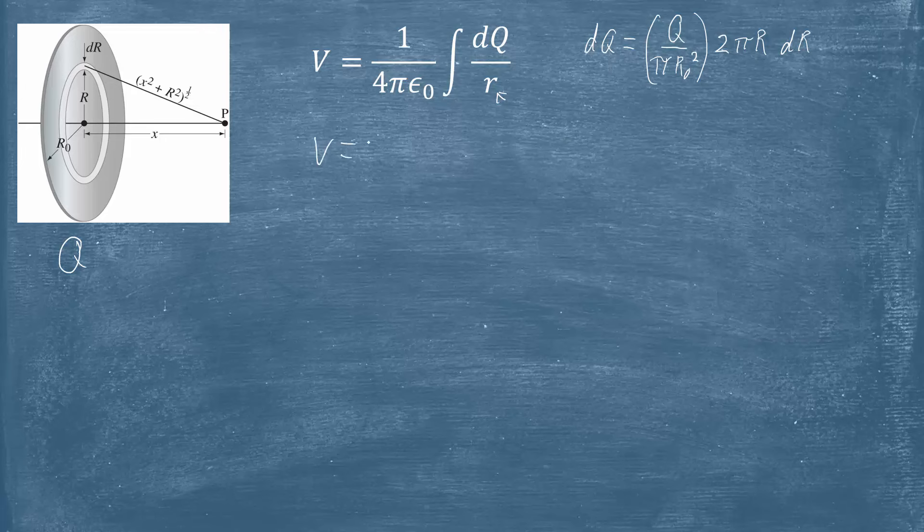So if I plug that in, again I'm going to switch this to k because it makes life a little easier, and then I can pull out all this stuff that's constant here. When I'm making a substitution we can go ahead and get rid of these pis as well, so I've got a factor of two there, I've got Q which is constant, big R naught is the total radius of my disk so that is constant, and then I'm left with a big R dR up top in the numerator. I still have that little r, and I'm going to go ahead and write that in terms of x and big R because big R is changing.